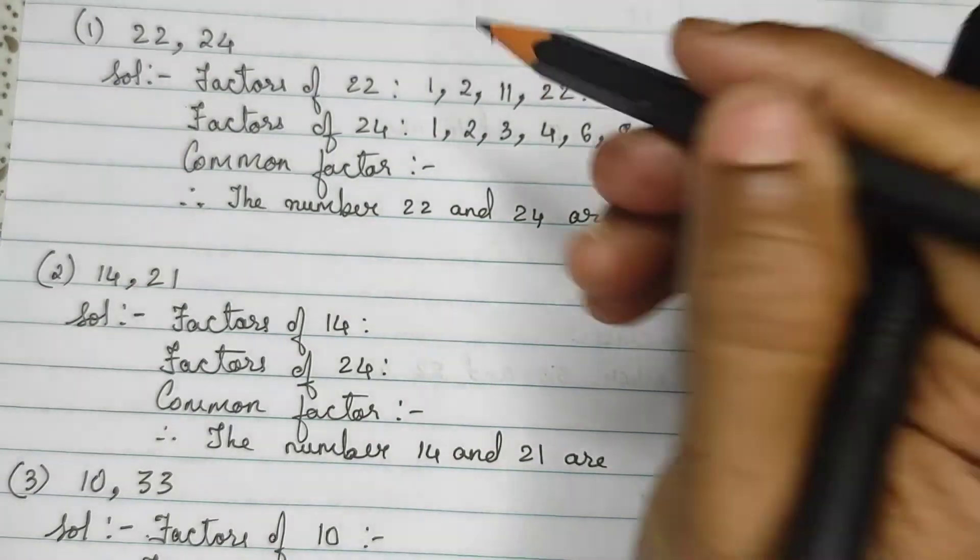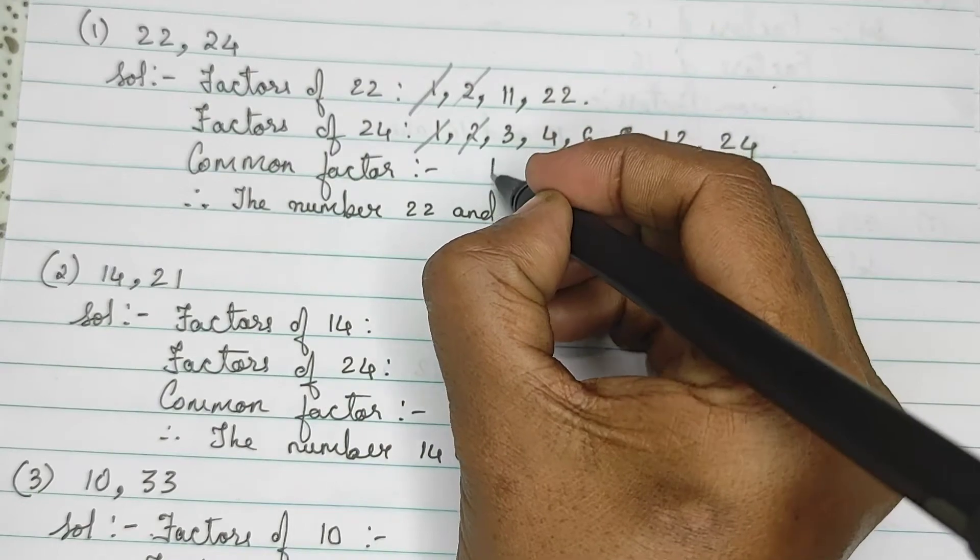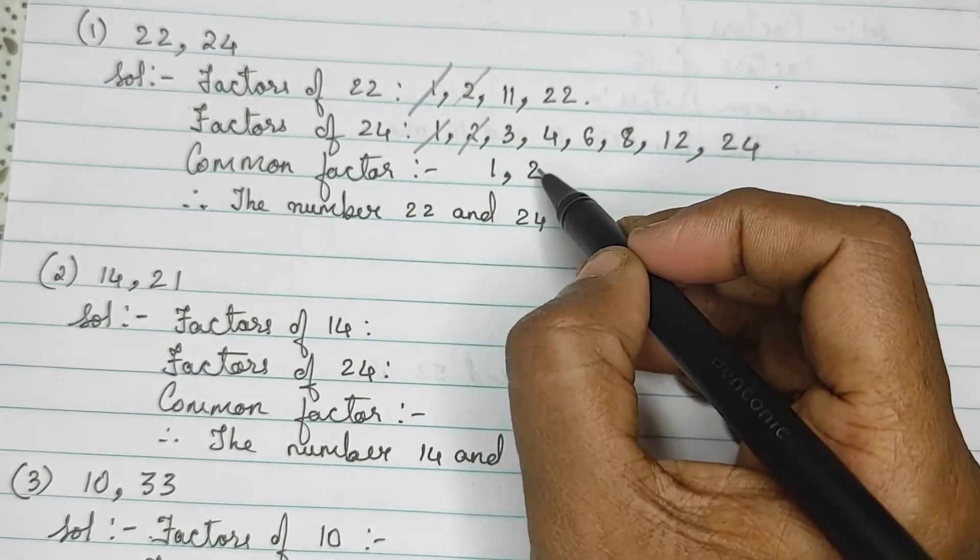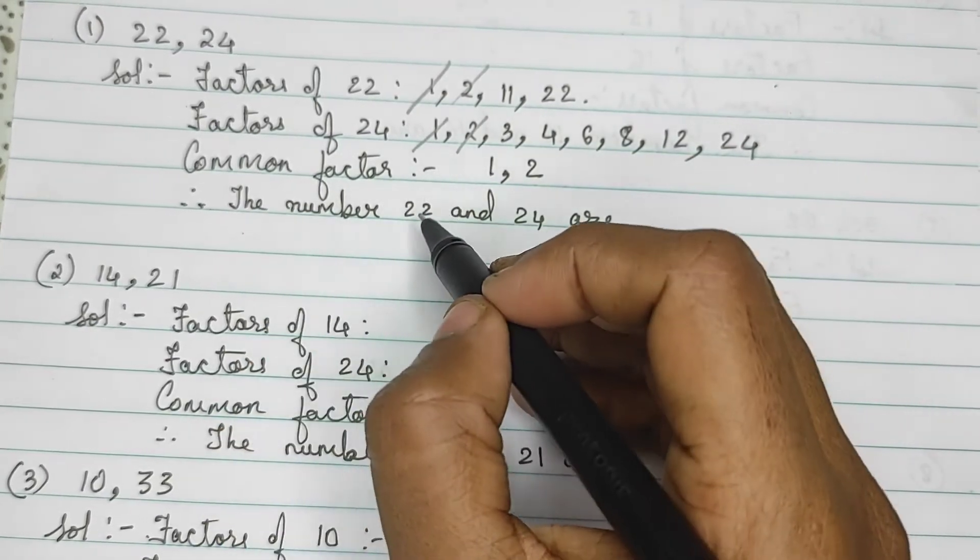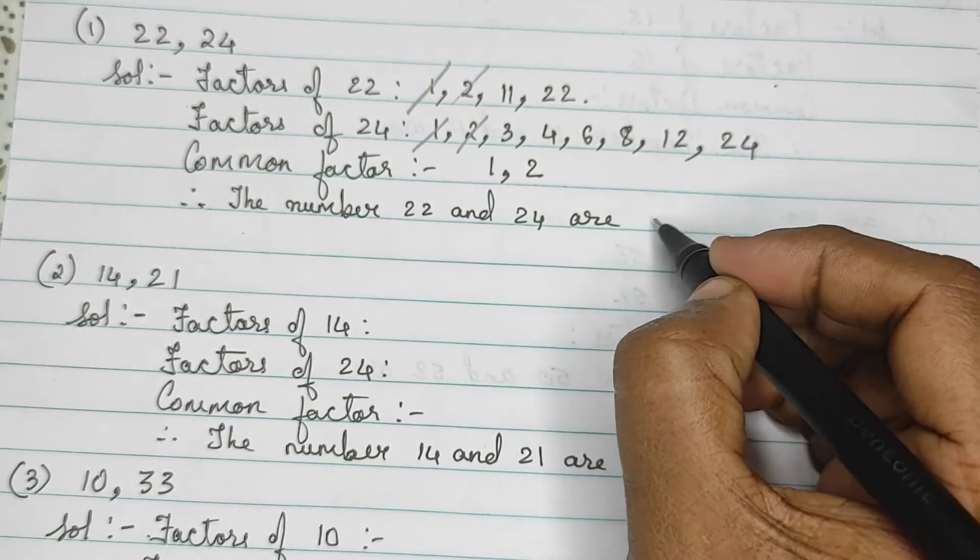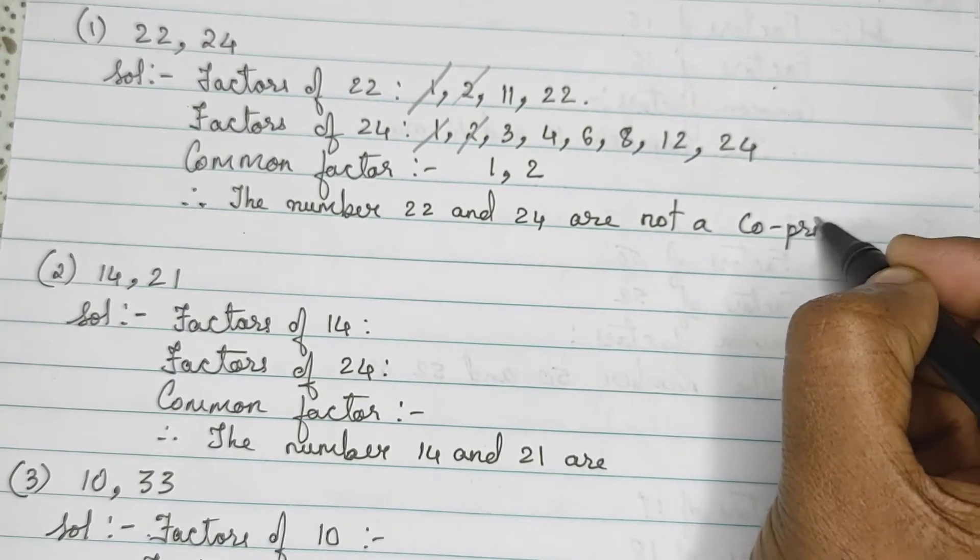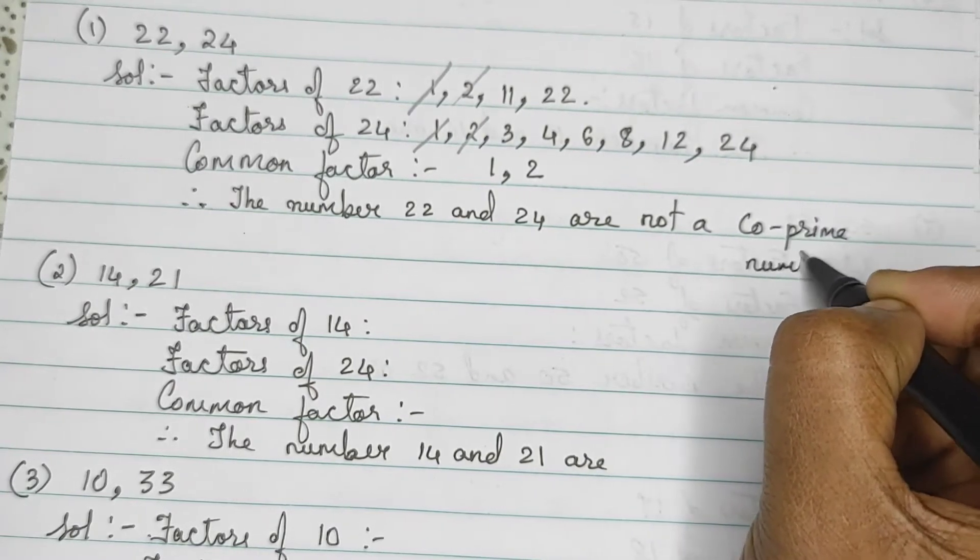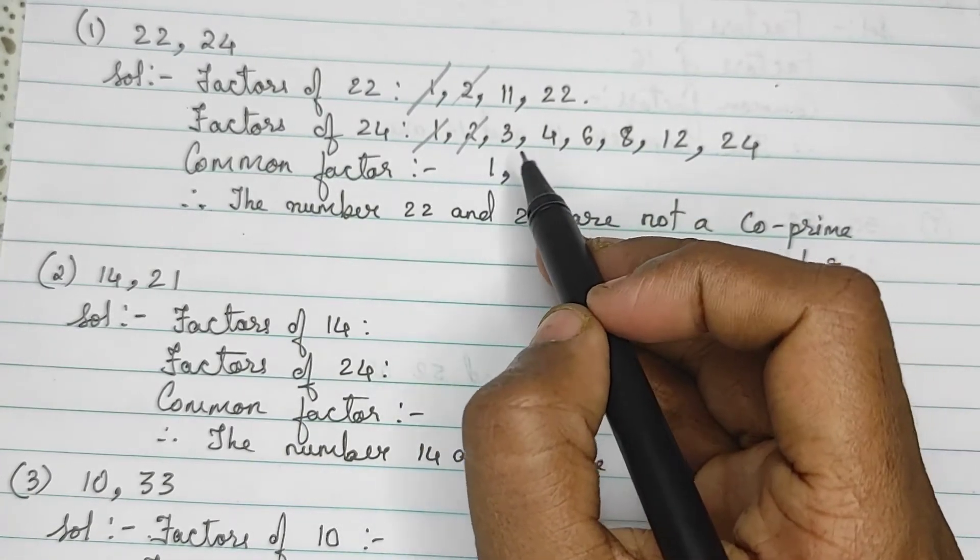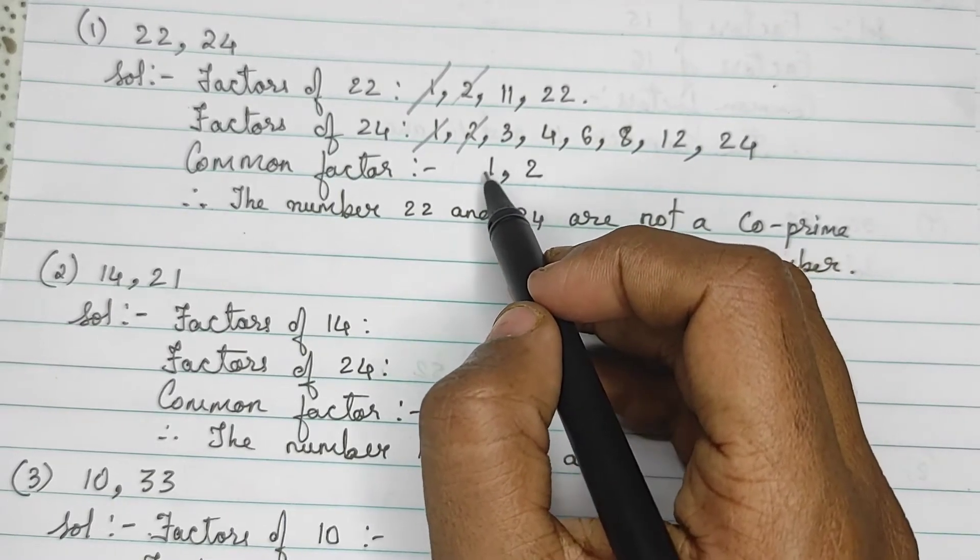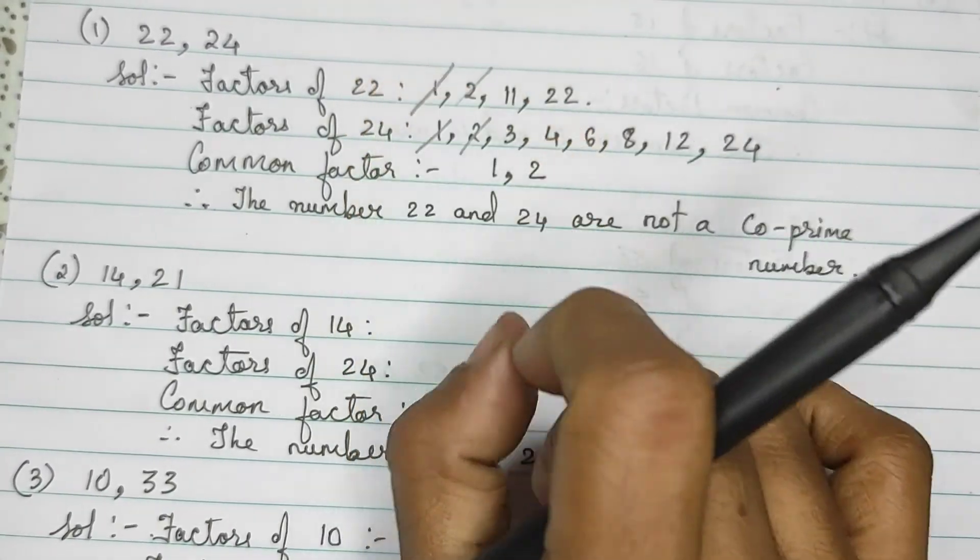Here, common factors we have 1 and 2. So, rather than 1, there is one more factor which is 2. So, the numbers 22 and 24 are not a co-prime number. Because apart from 1, it has one more common divisible. We need only 1 as a common factor.